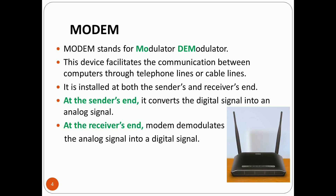The modem is installed at both the sender's and receiver's ends. At the sender's end it converts the digital signal into an analog signal, and at the receiver's end the modem demodulates the analog signal back into a digital signal.